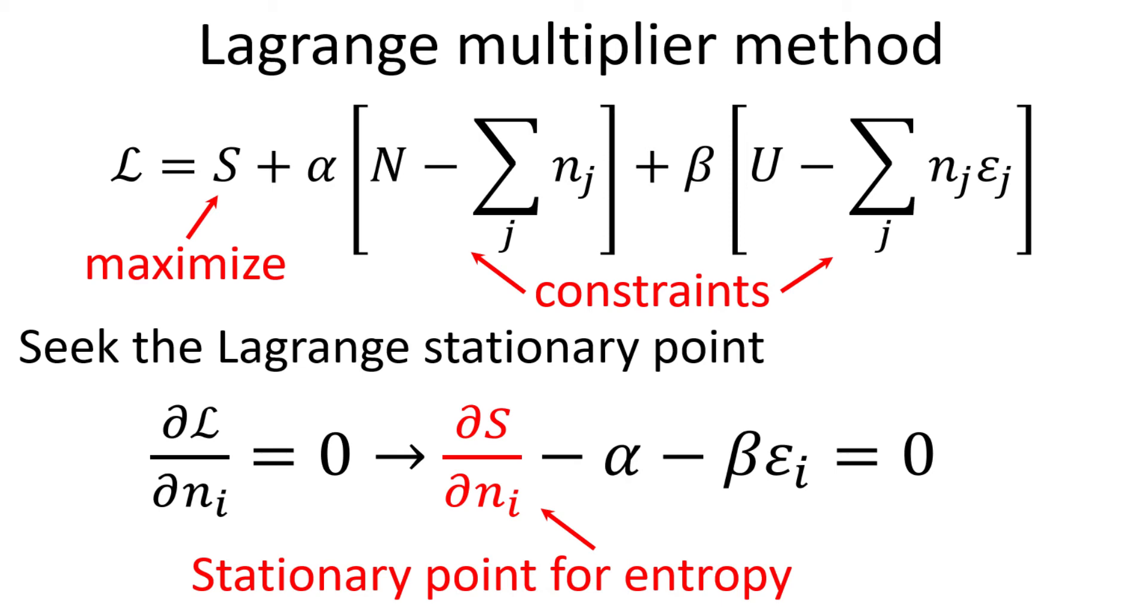We introduce an auxiliary function L, which consists of the entropy S which we seek to maximize, in addition to the two constraints. We seek to find the Lagrange stationary point with respect to the number of particles at each energy level i.